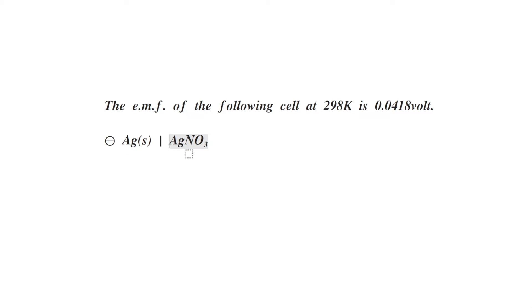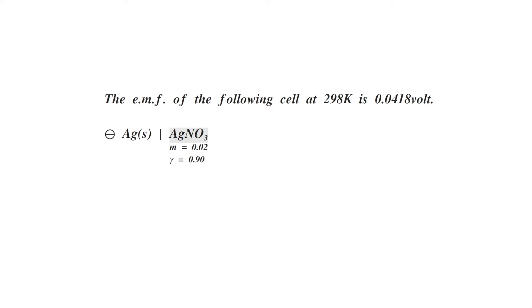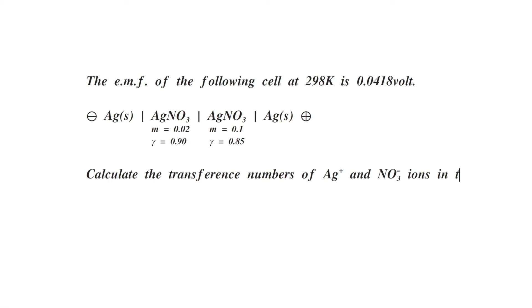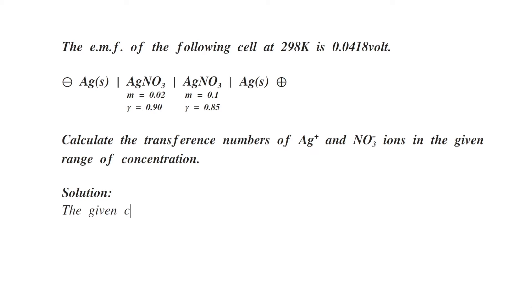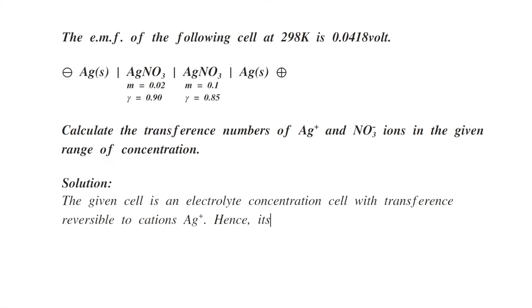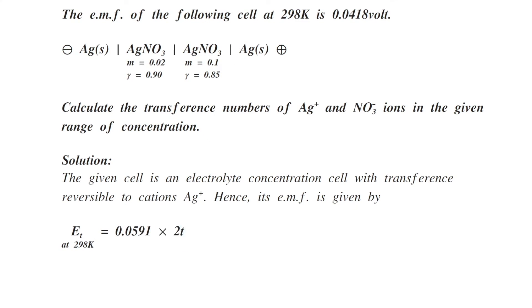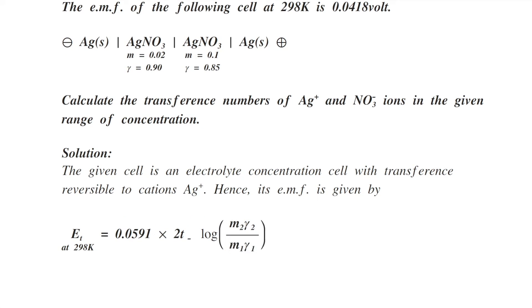Consider an example: the EMF of the following cell at 298 K is 0.0418 V. The cell is Ag(s) | AgNO3 (m = 0.02, γ = 0.9) ‖ AgNO3 (m = 0.1, γ = 0.85) | Ag(s). Calculate the transference number of silver ions and nitrate ions. This is an electrolyte concentration cell with transference reversible to cations (Ag⁺), so its EMF at 298 K is E = 0.0591 × 2T⁻ × log(M2γ2 / M1γ1).